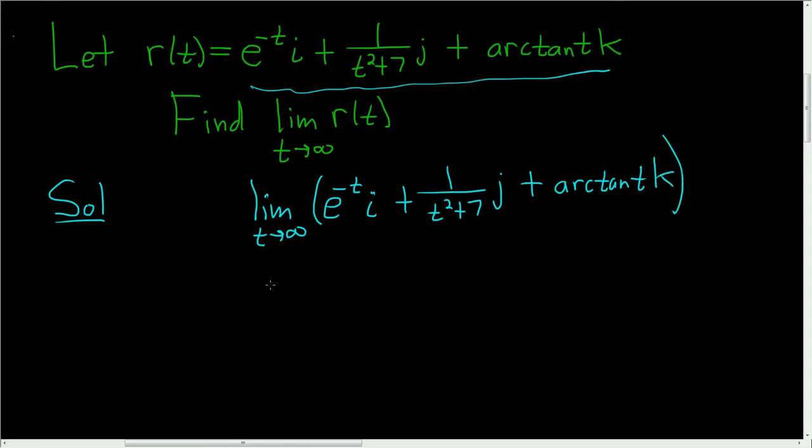At this point, we can take the limit. However, it may be useful to think of e to the negative t as 1 over e to the t, because as t approaches infinity, e to the t approaches infinity. So 1 over e to the t approaches 0. So this will be 0i.